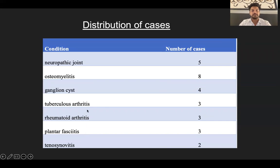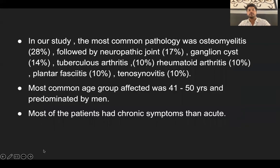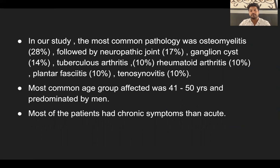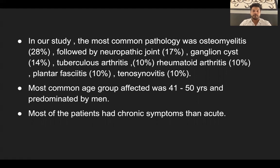Three cases were present in the study for several categories. In our study, the most common pathology was osteomyelitis at 28%, followed by neuropathic joint, ganglion cyst, tuberculosis arthritis, rheumatoid arthritis, plantar fasciitis, and tenosynovitis. The most common age group affected was 41 to 50 years, more common in males, and most patients had chronic rather than acute symptoms.